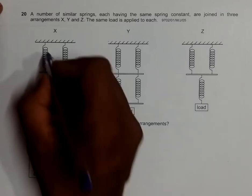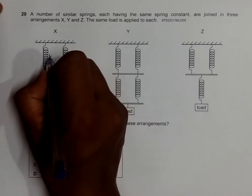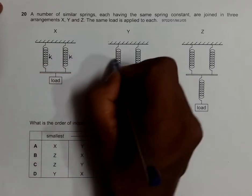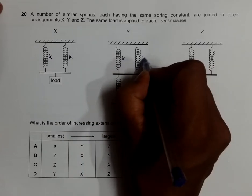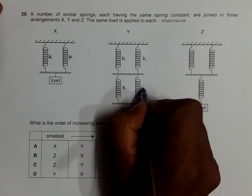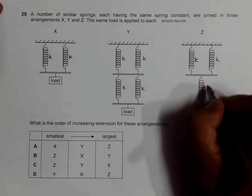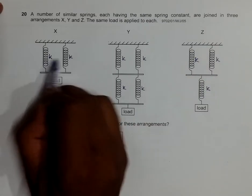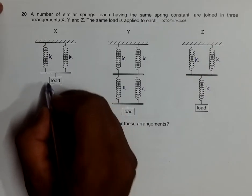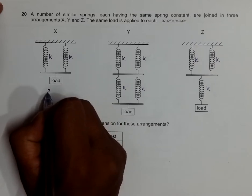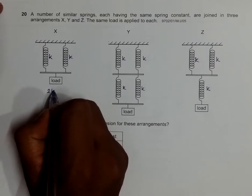So let's say the spring constants are K, K, K, K, K, K, K, and K. Here the springs are parallel, so the spring constant totally will be equal to 2K.